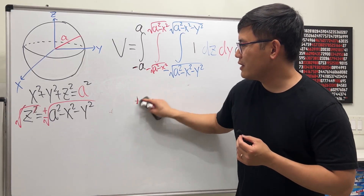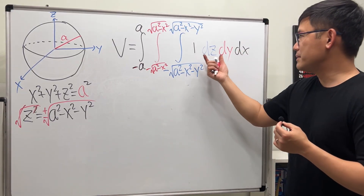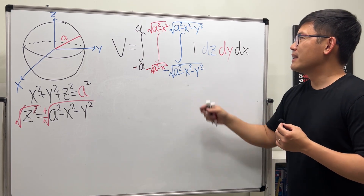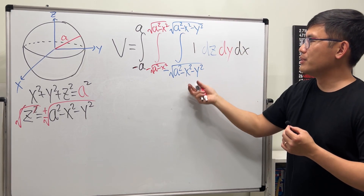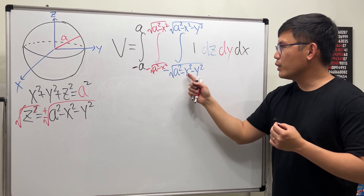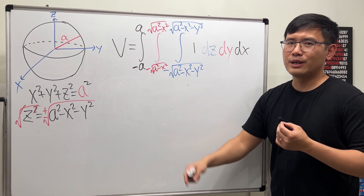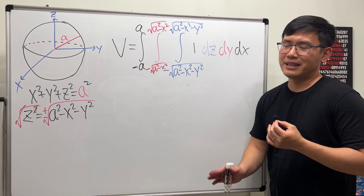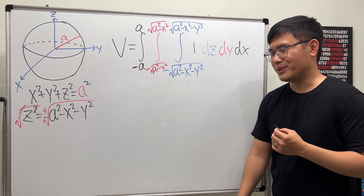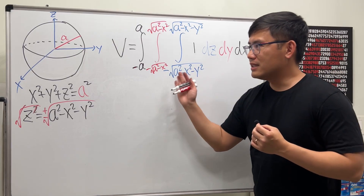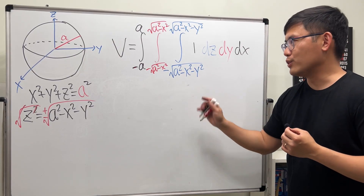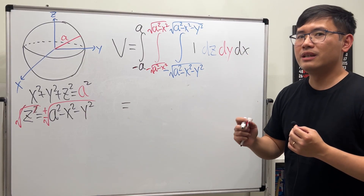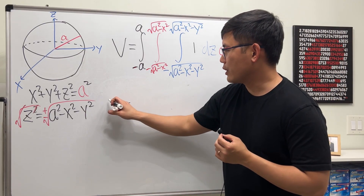Of course, when you integrate this by hand, the first step is easy — integrating 1 in z just gives z. But then you substitute the limits, and integrating in the y world you'll have to use trig substitution. So this is the setup, but usually we don't want to do it this way.